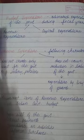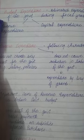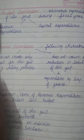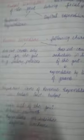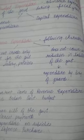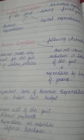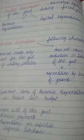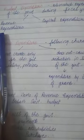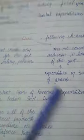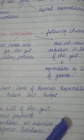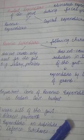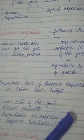Next, we are looking at budget expenditure. What is budget expenditure? It is the estimated expenditure of the government during the fiscal year. The government estimates the expenditure for an accounting year or fiscal year — that is called your budget expenditure. When we look at budget expenditure, we will also study revenue expenditure and capital expenditure, just as we studied revenue receipts and capital receipts.